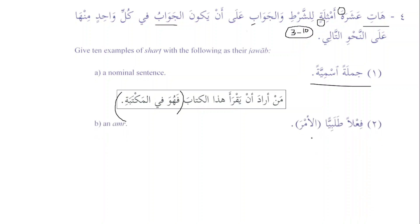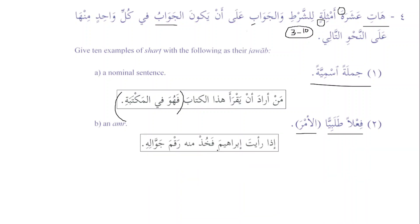Then it says the jawab al-shart should be fa'il talibi — a request — and in fa'il talibi it should be amr, a command. For example: 'If you see Ibrahim, take his mobile number from him.' We can see that 'fa-khud' is amr, so the jawab al-shart here is a command. Fa is added to it.